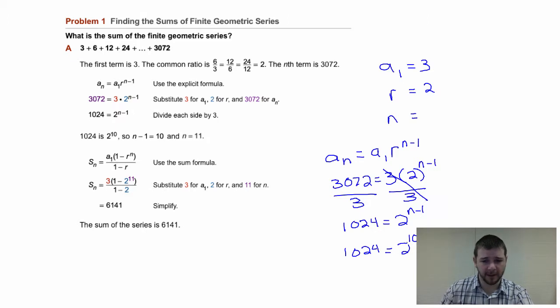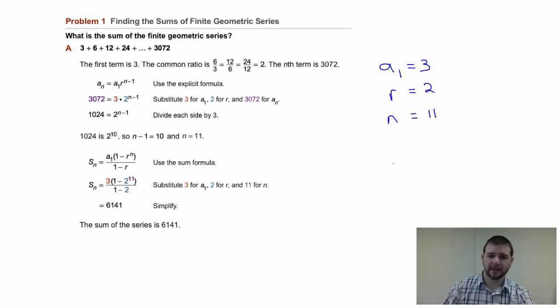Therefore, if n minus 1 equals 10, we know that n must equal 11. So our 11th term is 3072, our n value is therefore 11. So I'd consider that part 1 as being done. We found n, we've identified r and a sub 1.